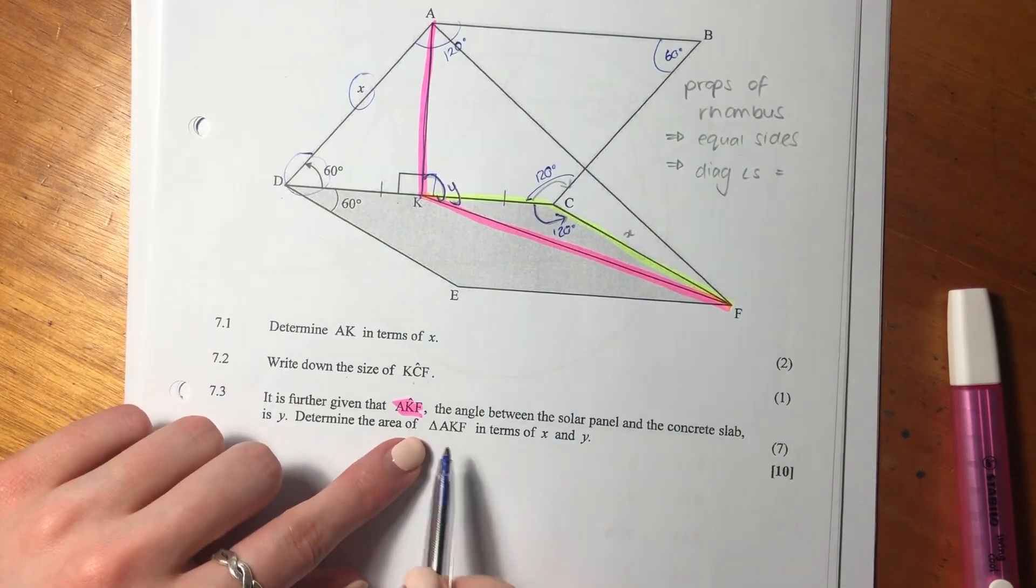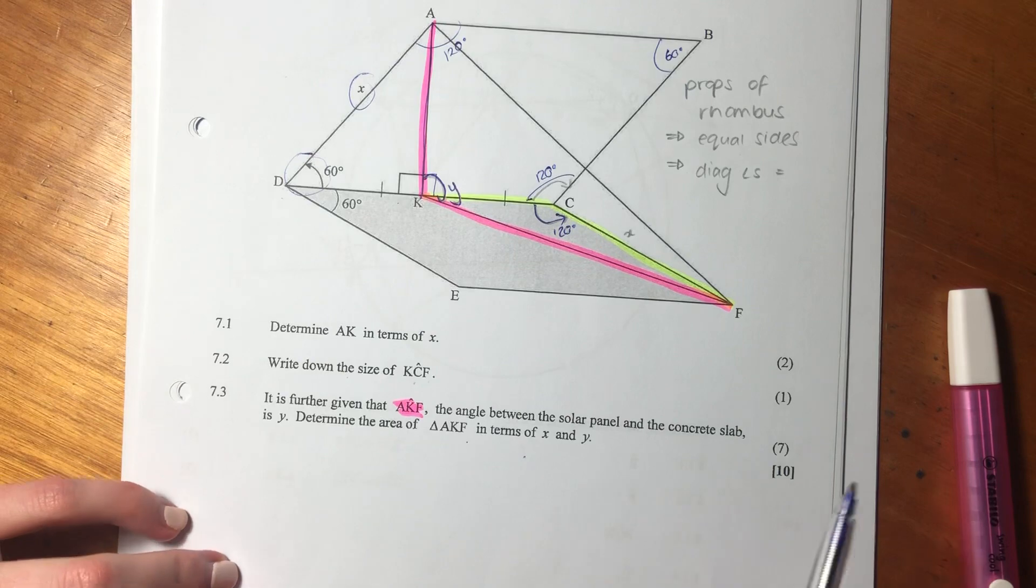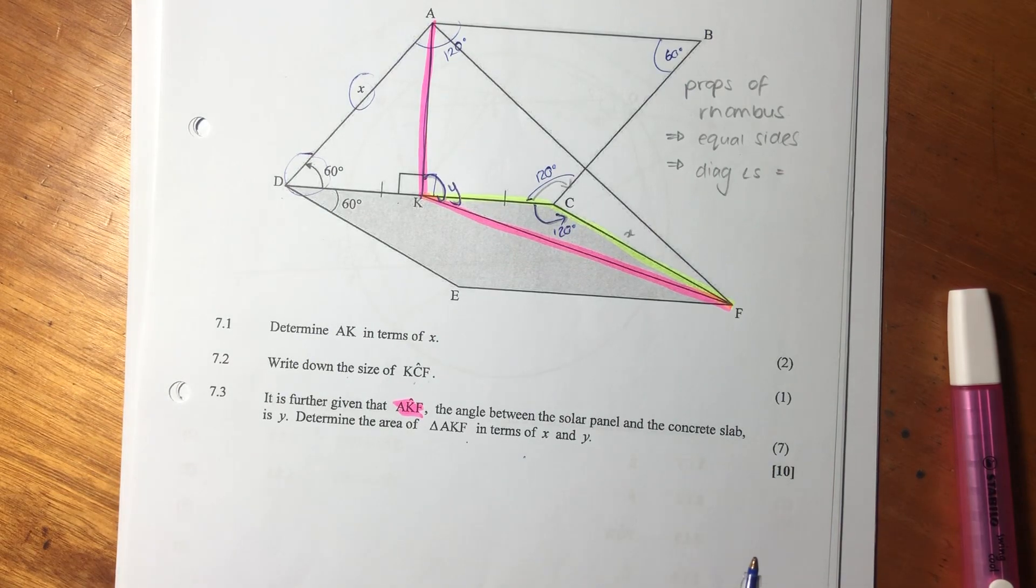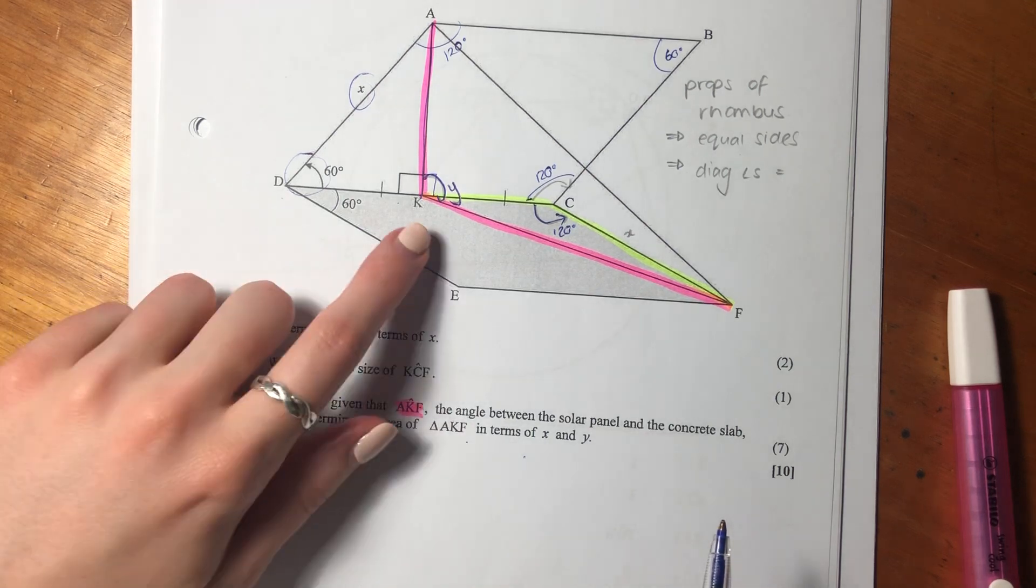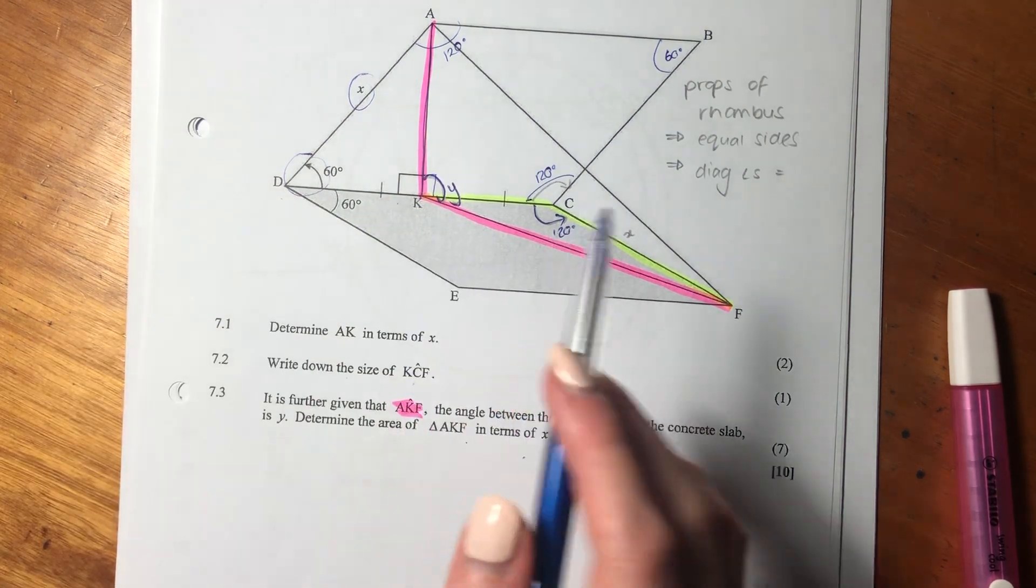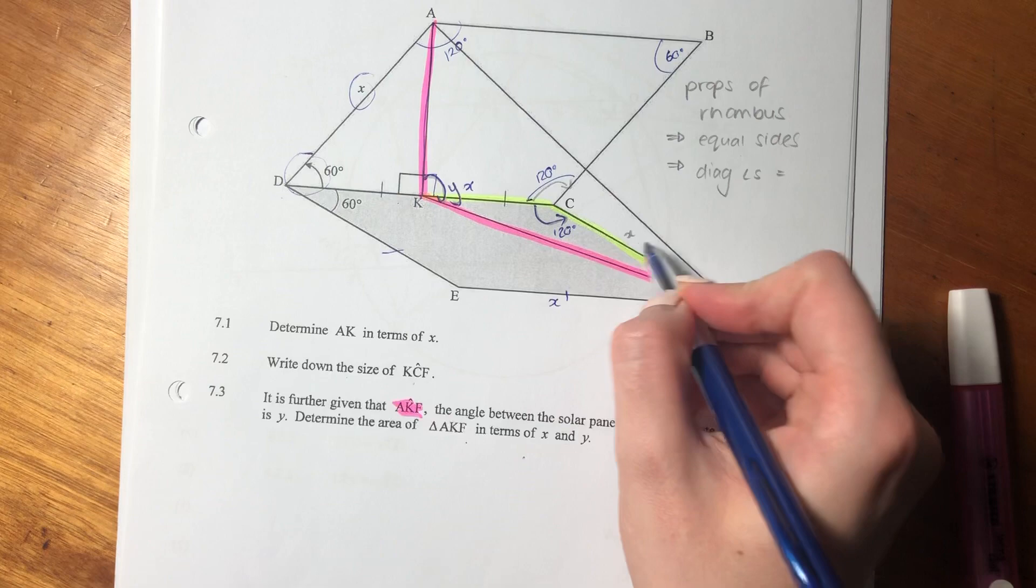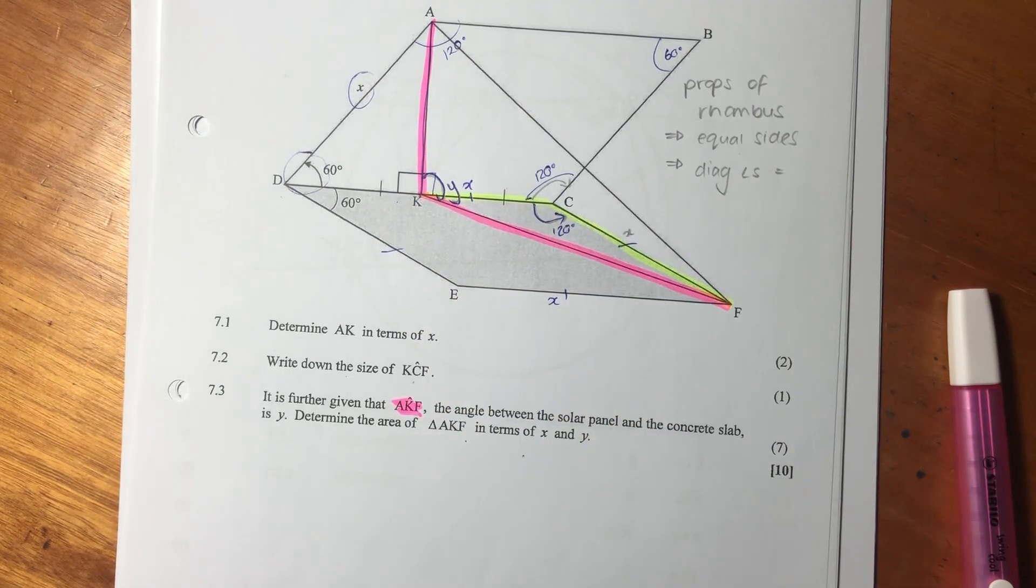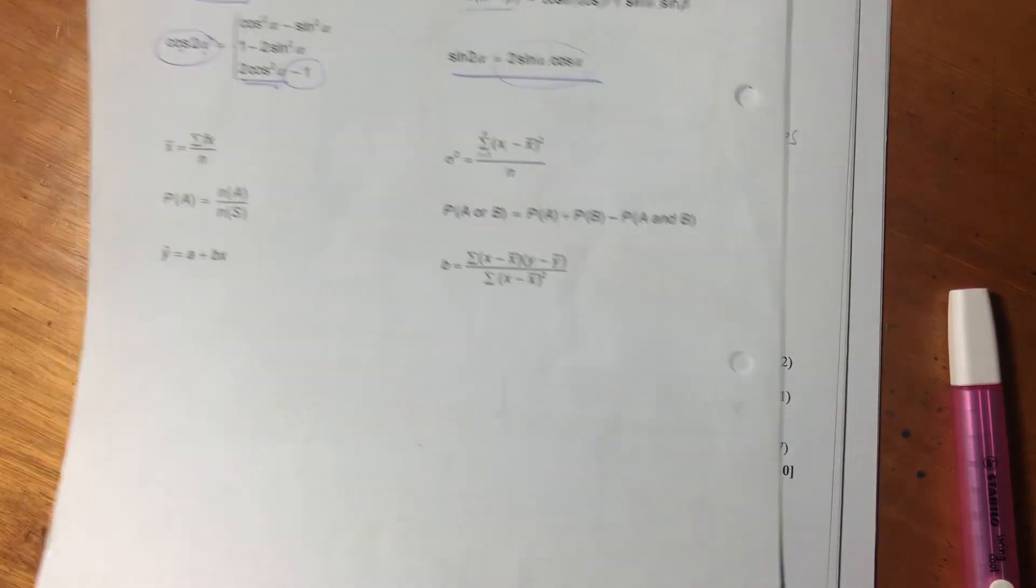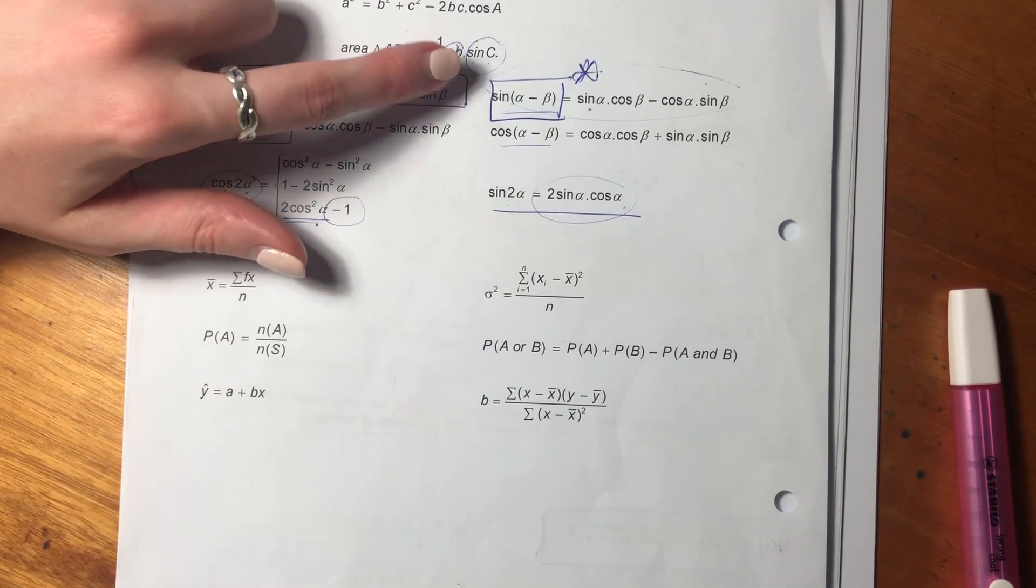Determine the area of AKF in terms of X and Y. We want the area of the strip. Let's think what we actually have here. We know we have this angle Y and we know that each side equals X. We're probably going to use this half AB sine C formula for area.